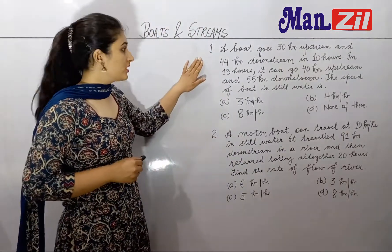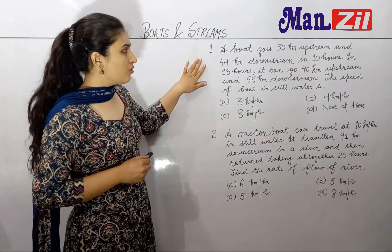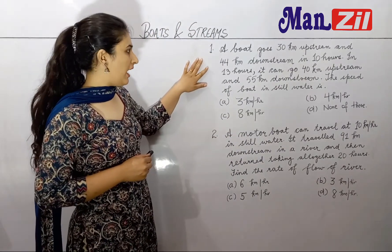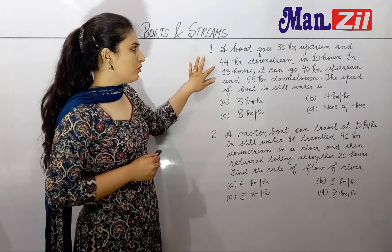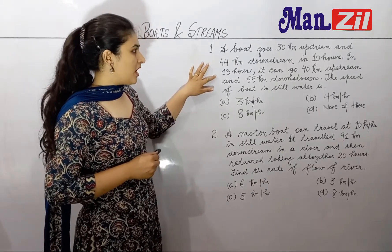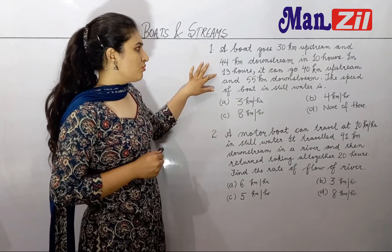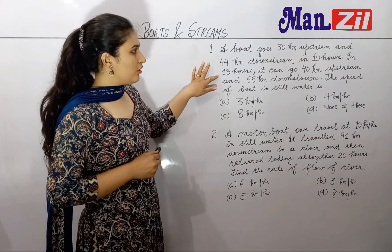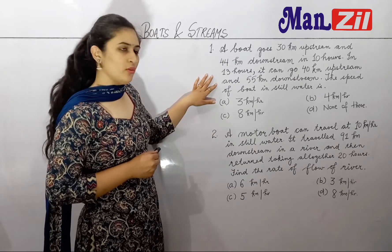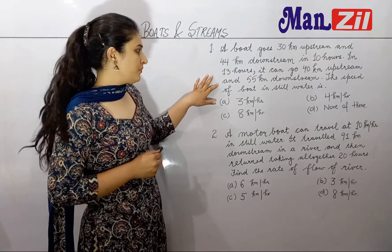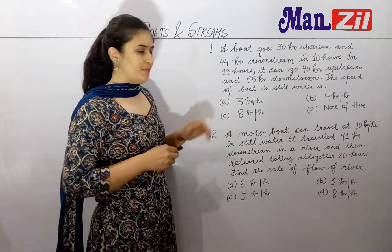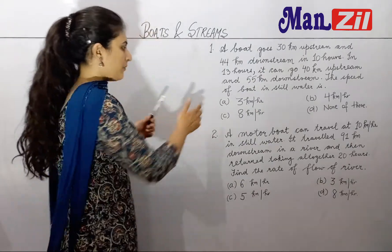Our first question is: a boat goes 30 km upstream and 44 km downstream in 10 hours. In 13 hours, it can go 40 km upstream and 55 km downstream. Find the speed of the boat. These are our options.